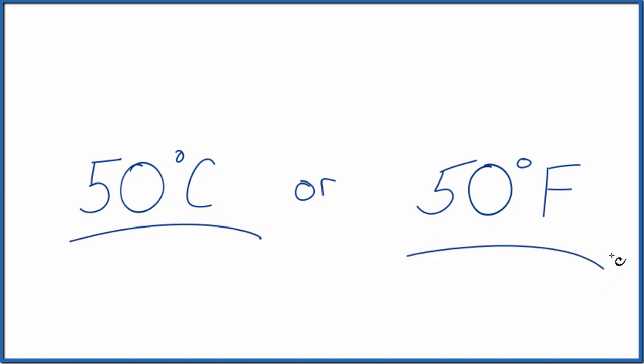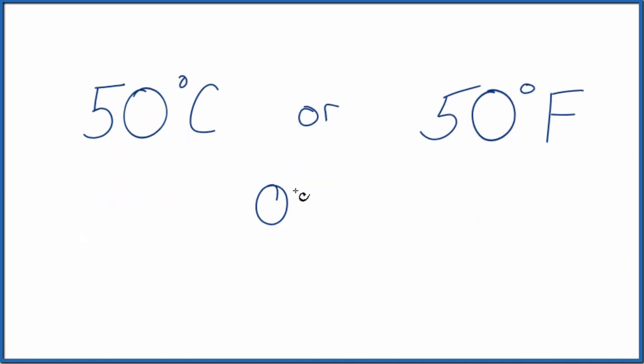And here's how we can figure that out. So first off, it's helpful to know that zero degrees Celsius equals 32 degrees Fahrenheit. It looks like 50 degrees Celsius is going to be a higher temperature than 50 Fahrenheit, just looking at these numbers here, but we can actually figure that out.